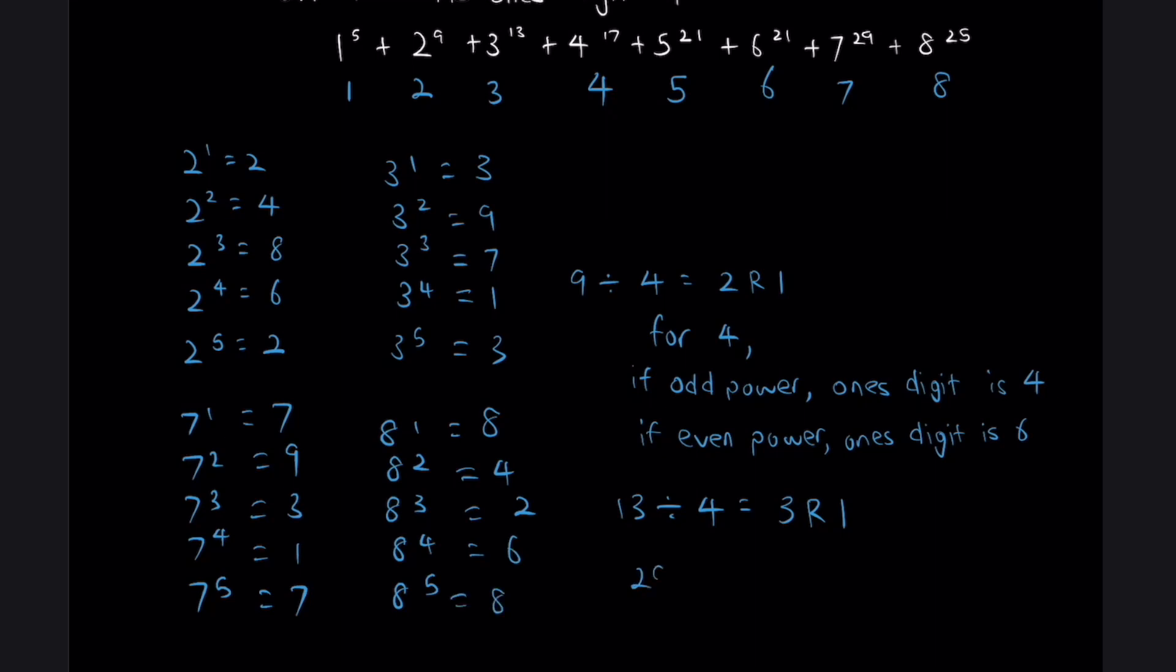So for 7, 29 divided by 4, what do we get? We get 7 remainder 1. Is our ones digit 7? Yeah, it is. And finally, for 8, 25 divided by 4, we get 6 remainder 1. And is our ones digit 8? It is.